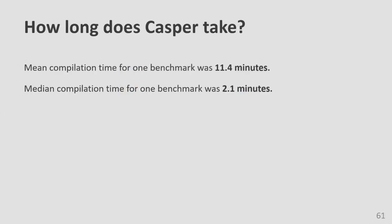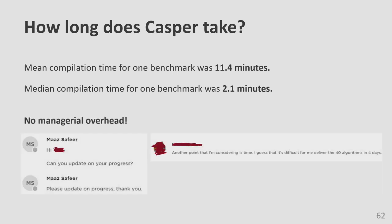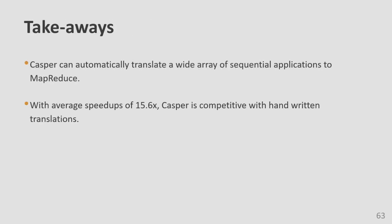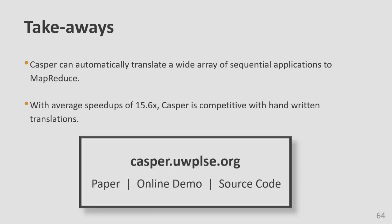It takes Casper about 10 minutes on average to translate one code fragment, with an even lower median time — really simple programs translate very quickly. This doesn't count the overhead of hiring developers and ensuring they complete work on time. The key takeaways: you can use compilers to do high-level transformations, and with a speedup of about 16x, Casper is competitive with handwritten translations. I'll take your questions at the end. Thank you for listening.